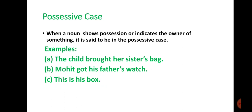Now, possessive case. When a noun shows possession, ownership, or indicates the owner of something, it is said to be in the possessive case. Examples: 'The child brought her sister's bag.' 'Mohit got his father's watch.' 'This is his box.' In these sentences, 'sister's,' 'father's,' and 'his' are in the possessive case because each denotes the possessor or owner of something.